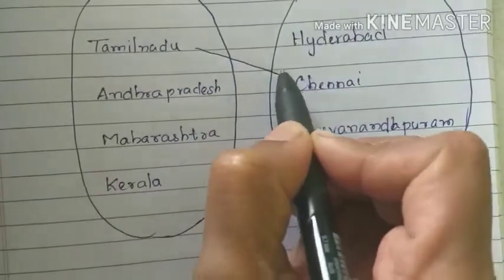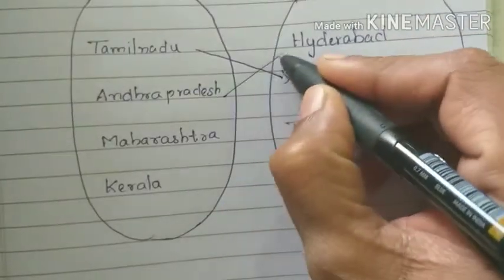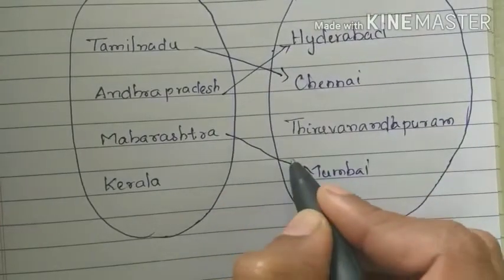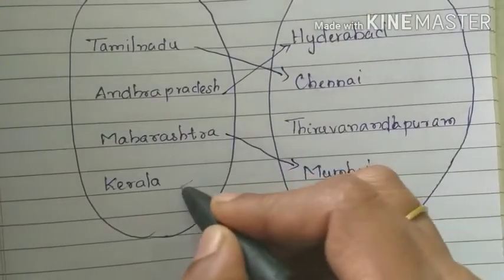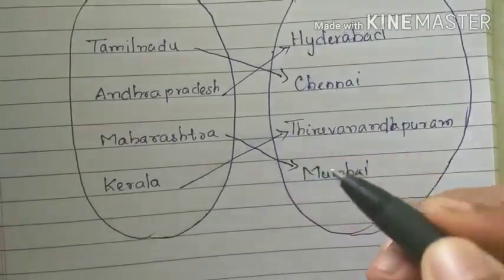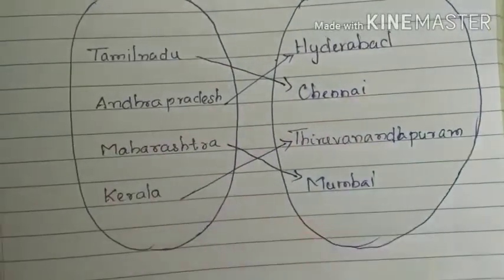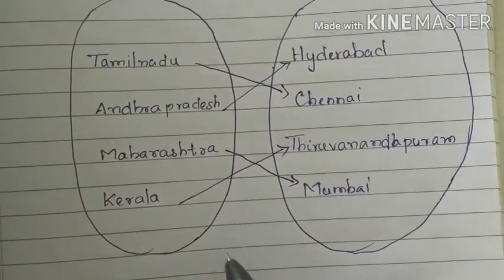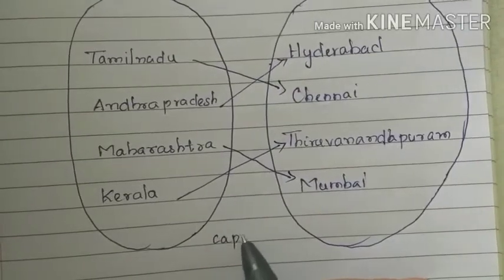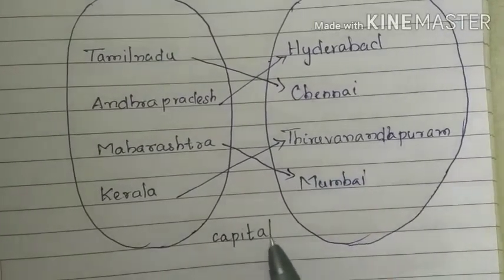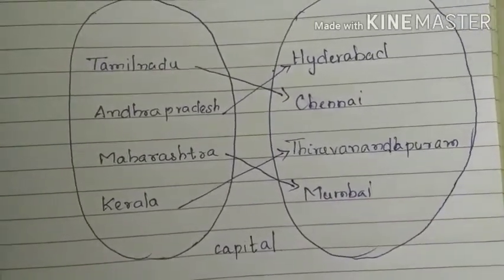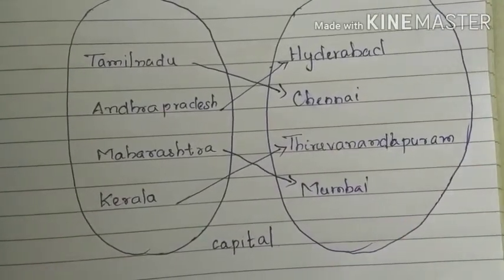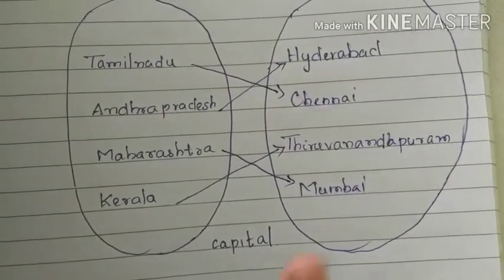Tamil Nadu — Chennai, Andhra Pradesh — Hyderabad, Maharashtra — Mumbai, Kerala — Thiruvananthapuram. What is the relation between these two sets? The relation is 'capital.' This is one set connected to another — one set is the connection or relation. This is the example. This is mathematical.